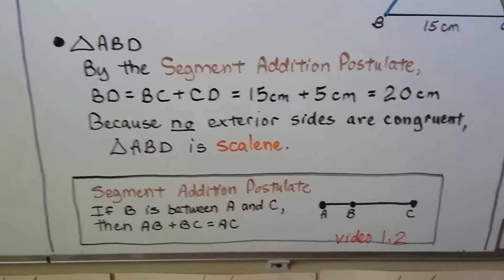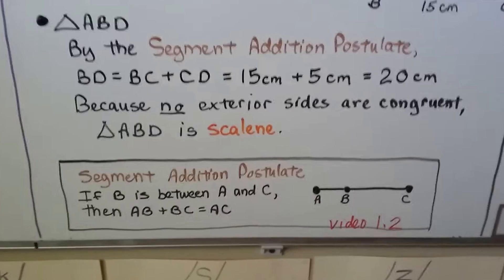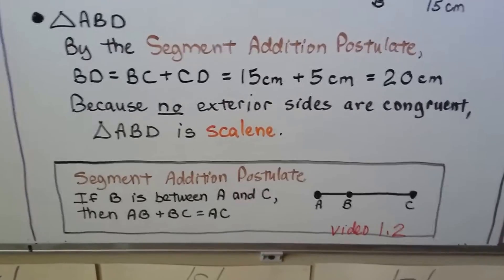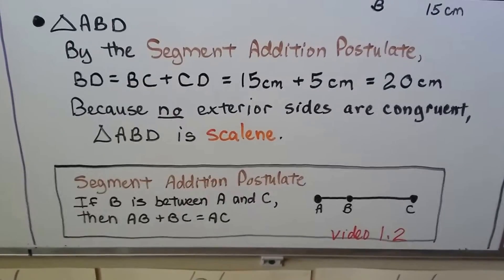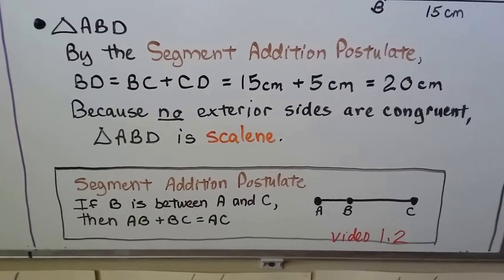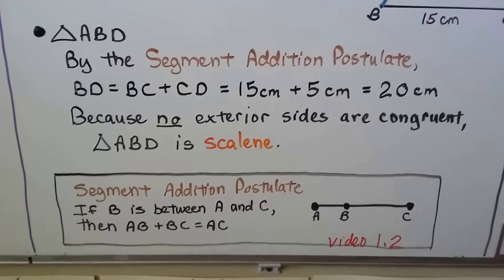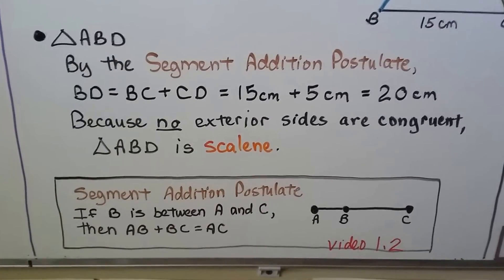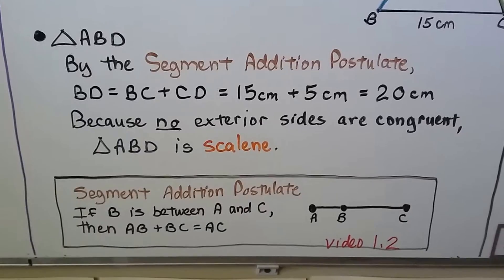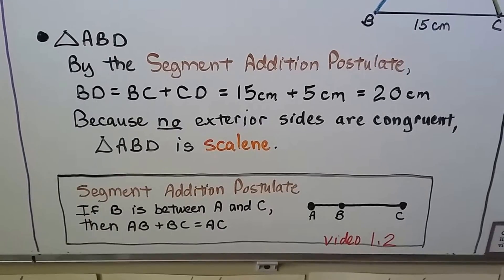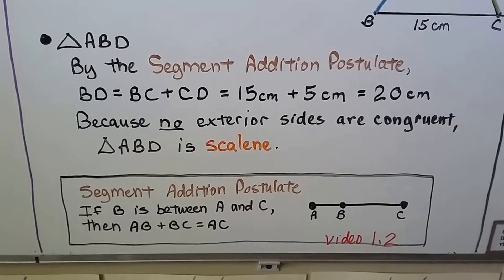Remember the segment addition postulate from video 1.2: if B is between A and C, then AB plus BC equals AC. We can add those two segments to get the entire segment.